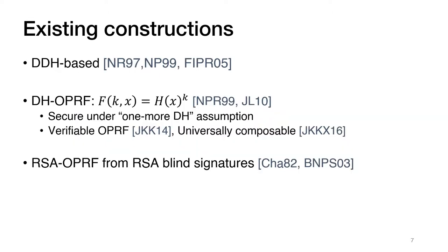In terms of existing constructions, the original paper by Friedman, Ishai, Pincus and Reingold that introduced the notion of oblivious PRF also showed that the Naor-Reingold DDH-based PRF admits an oblivious evaluation protocol. There is another very simple and useful oblivious PRF: the function h(x)^k. It was shown to be a secure PRF from DDH in the random oracle model, and later Jarecki and Liu gave an oblivious evaluation protocol secure under the one-more Diffie-Hellman assumption in the random oracle model. This was later turned into a verifiable oblivious PRF and shown to be universally composable.